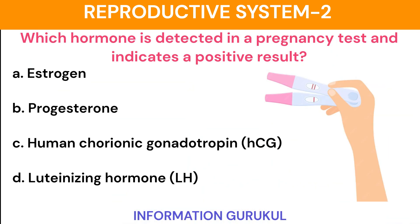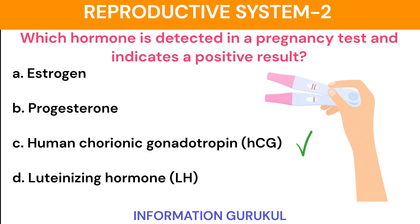Which hormone is detected in a pregnancy test and indicates a positive result? Human chorionic gonadotropin.